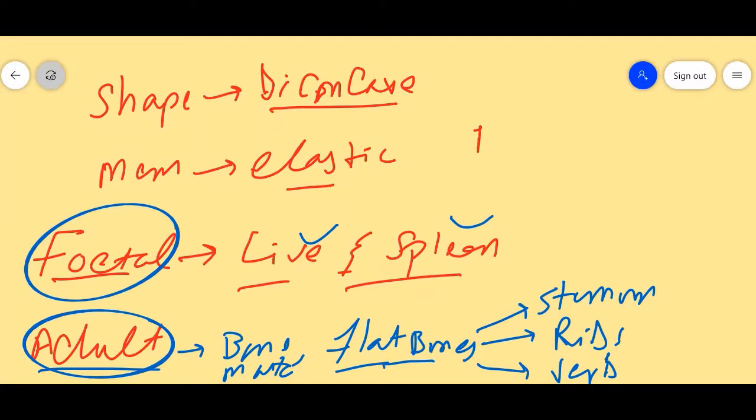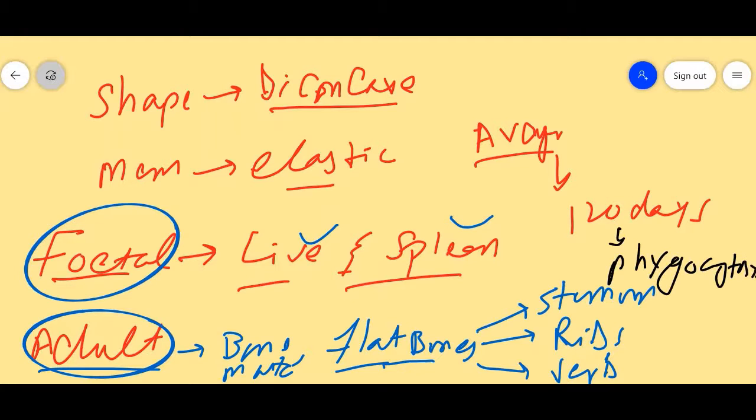The average age of red blood cells is 120 days. After 120 days, phagocytosis starts, and phagocytic cells engulf them, leading to their death. So this is all about red blood cells. We discussed their properties, their shapes - biconcave in nature with elastic membrane. In the fetal stage, they are made in the liver and spleen, while in adults they are made in flat bones and bone marrow. Their average lifespan is 120 days. In the immature stage, the nucleus exists, but when they mature and enter the bloodstream, the nucleus is degraded or destroyed.